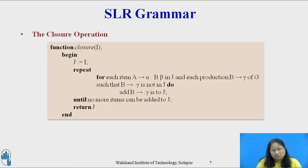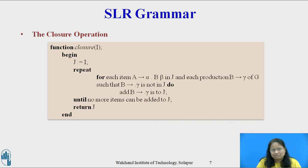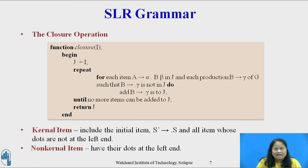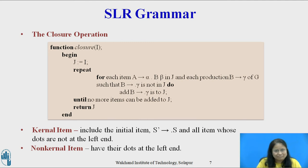The closure operation algorithm is given on this slide. In this algorithm, if one B production is added to the closure with the dot at the left end, then all B productions are similarly added. Kernel items include the initial item S' derives dot S and all items whose dots are not at the left end. Non-kernel items have their dots at the left end. Each set of items is formed by taking the closure of a set of kernel items.